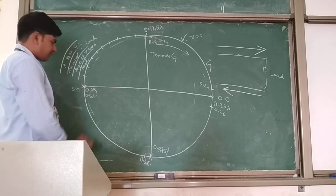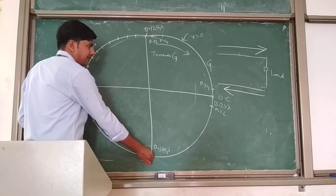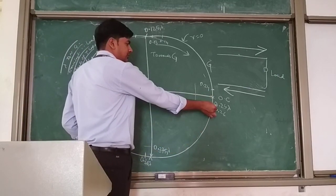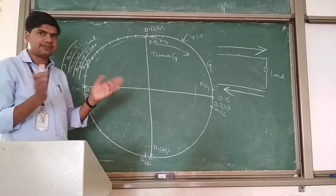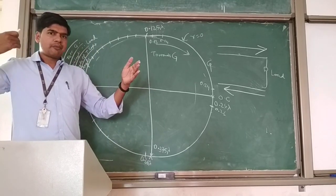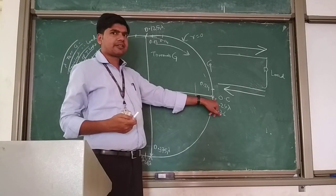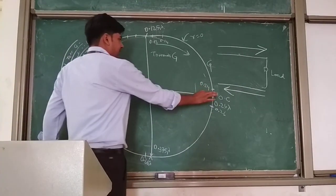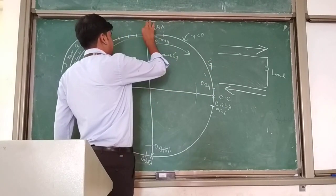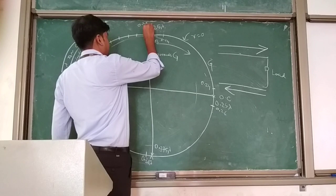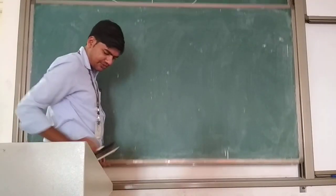For the towards-load scale, the values go 0, 0.1, 0.2, 0.3, 0.4, 0.5, continuing to 0.125. This is 0.25. In both cases, 0.25 will be the same because it is the half-point. Whether you are moving from load to generator or generator to load, you reach the half point which has the same value. Continuing, you get 0.375 here for the load scale.